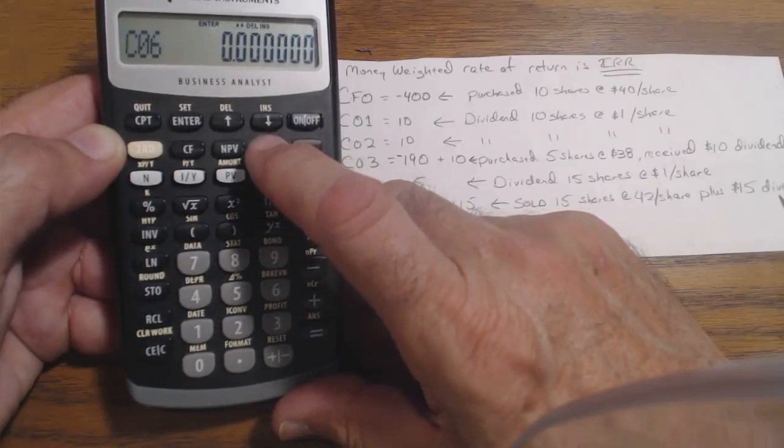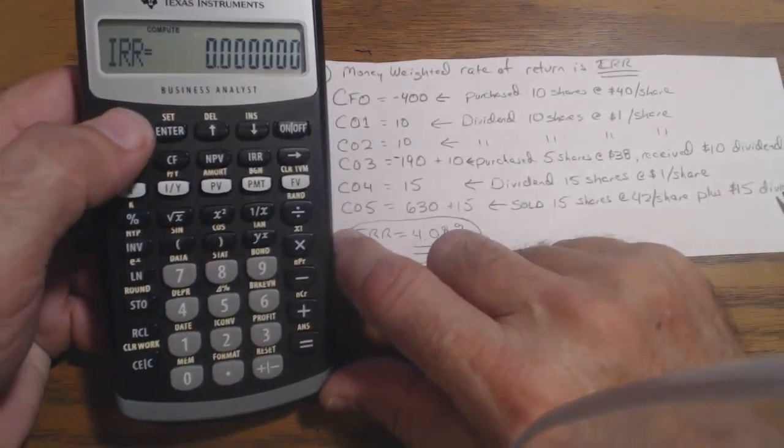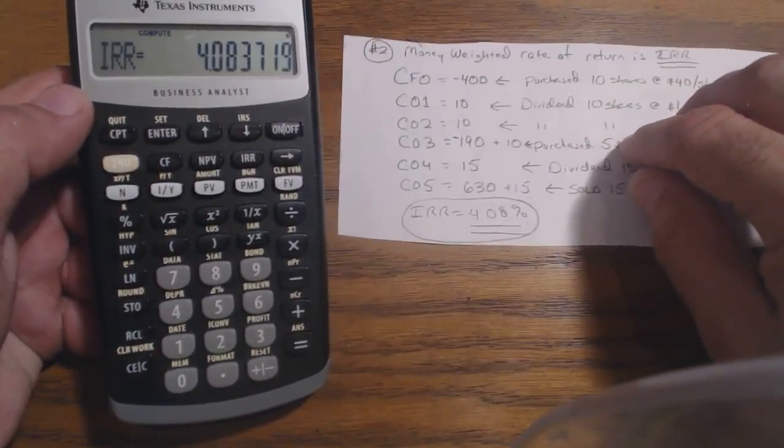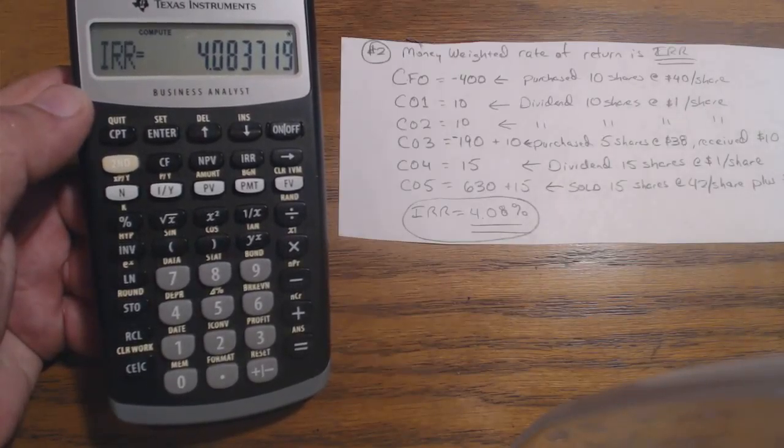Okay, $645 down. So you're done with that. Now go to IRR. It says zero, but that's because you haven't hit compute. Hit compute. And your IRR is 4.08%. That's problem number two on page 68.